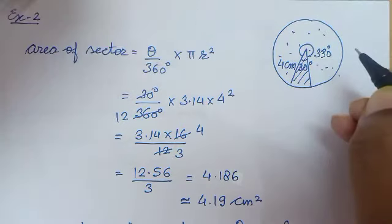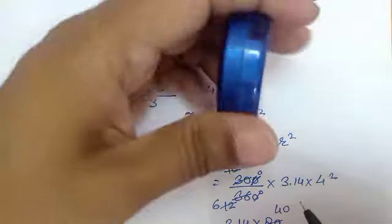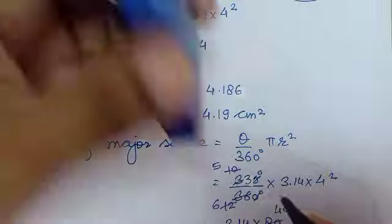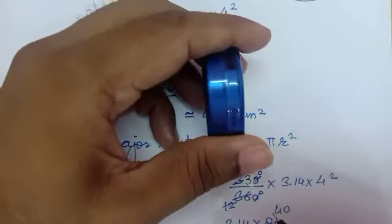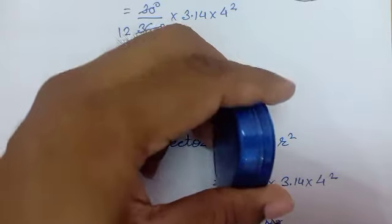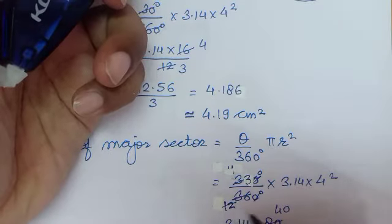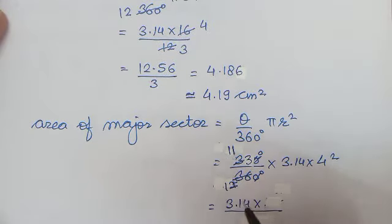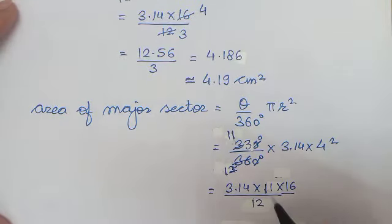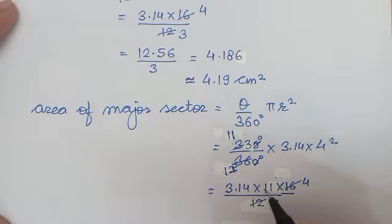This is 330 degree. 330 degree को जब हम cut करेंगे तो ऊपर 11 और नीचे 12 बचेगा. So now it is 11 by 12. यहाँ पर 3.14 into 11 into 16 by 12. 12 se cut karein: 4, 3s are 12, 4, 4s are 16. So yahan par 11, 4s are 44. Toh 44 ko multiply kariye — 3.14 into 44.